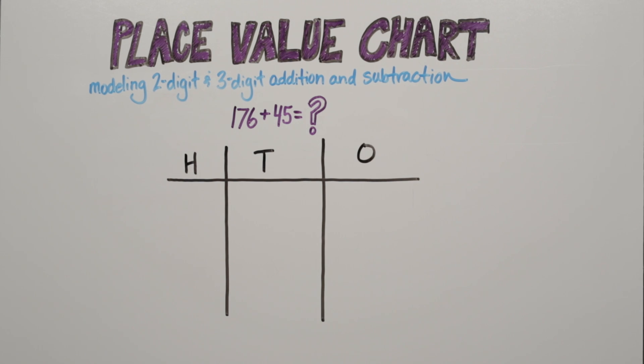176 is made up of 100, 7 tens, and 6 ones. In 45, there are no hundreds, 4 tens, and 5 ones.